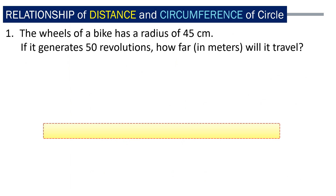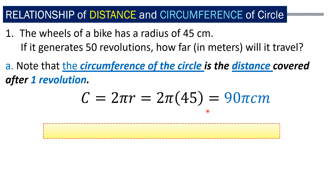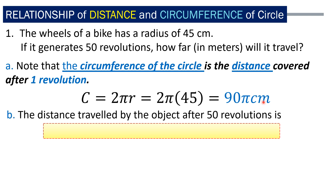Let us have the first example. The wheel of a bike has a radius of 45 centimeters. If it generates 50 revolutions, how far will it travel? Take note that the circumference of the circle is the distance covered after 1 revolution. So we get the circumference: 2π times the radius 45, which gives us 90π centimeters. That 90π centimeters represents the distance covered after 1 revolution.